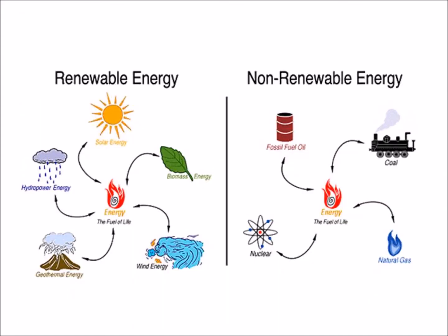Here we are going to see the different types of renewable and non-renewable energy. Renewable energies are solar energy, biomass energy, wind energy, geothermal energy, and hydropower energy. The different examples of non-renewable energy are fossil fuel oil, coal, natural gas, and nuclear energy. Remember that non-renewable energies pollute the environment.